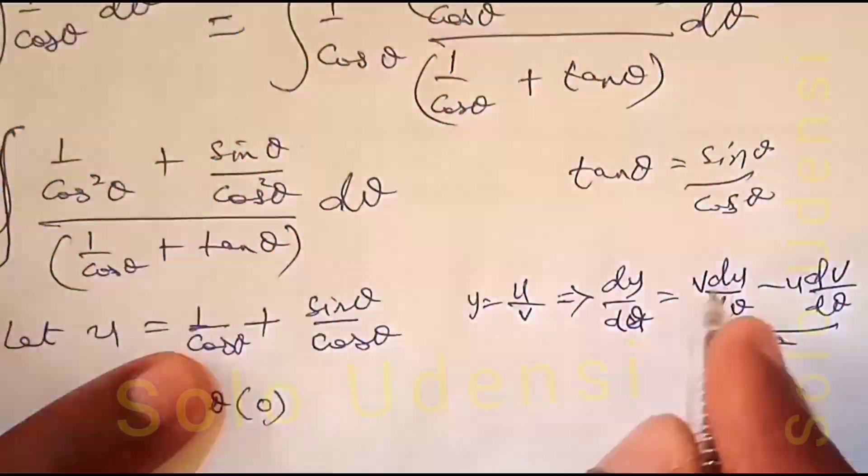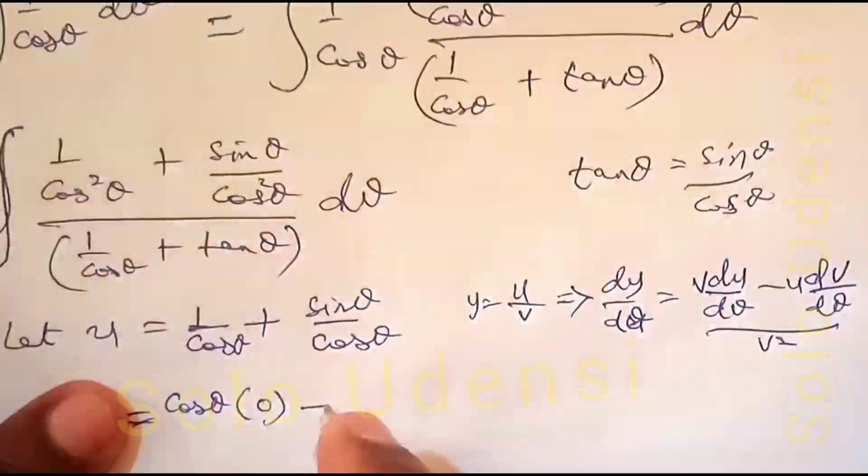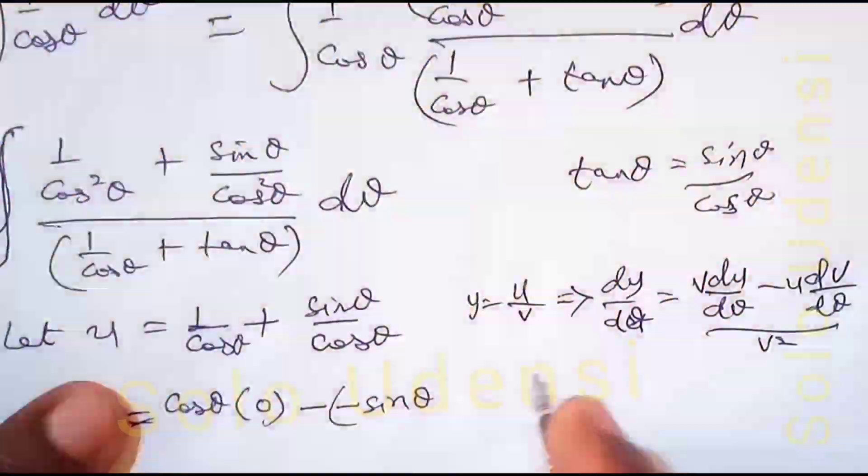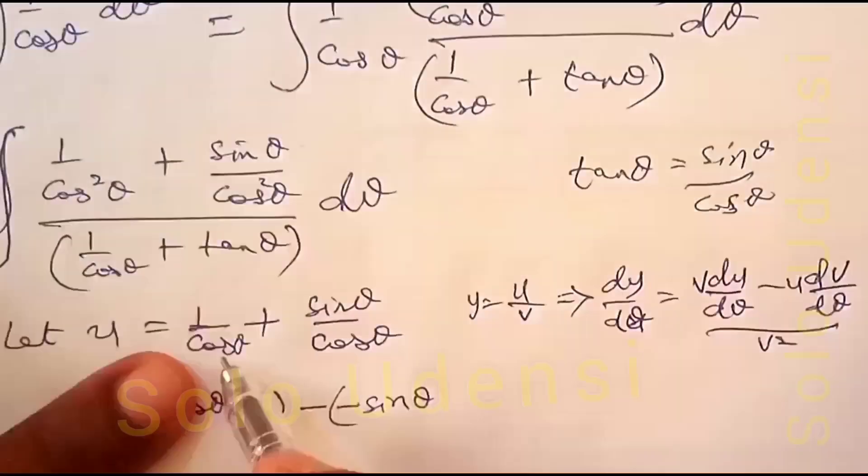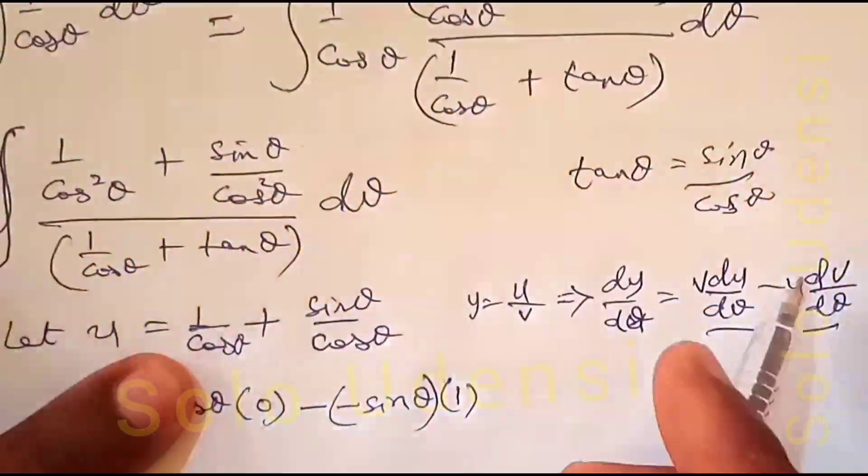which is 0 because it's a constant, minus sin theta. If we differentiate cos theta with respect to theta, we have minus cos theta times 1, where u is 1.